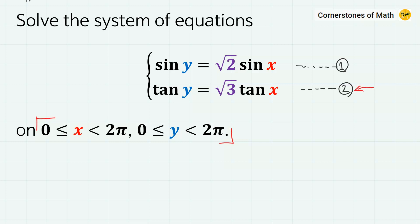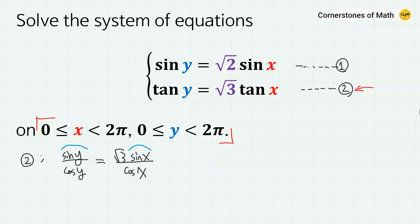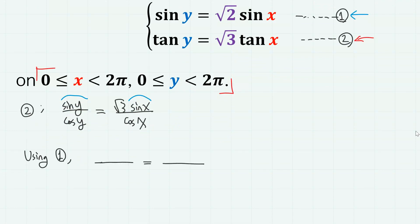I will start from the second equation. Since tangent is sine divided by cosine, we can write this equation as sine y over cosine y equals square root of 3 sine x over cosine x. So we have sines on the numerators, and we can use equation 1 to change sine y into square root of 2 sine x. So we have square root of 2 sine x over cosine y equals square root of 3 sine x over cosine x.